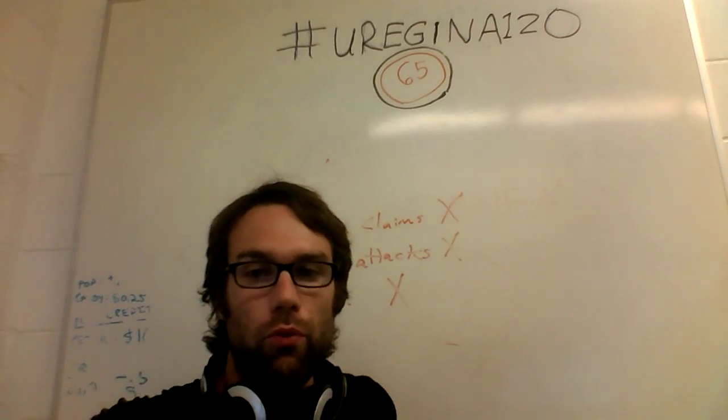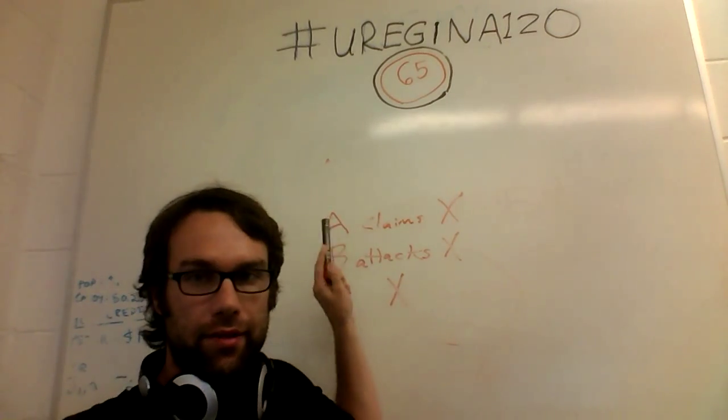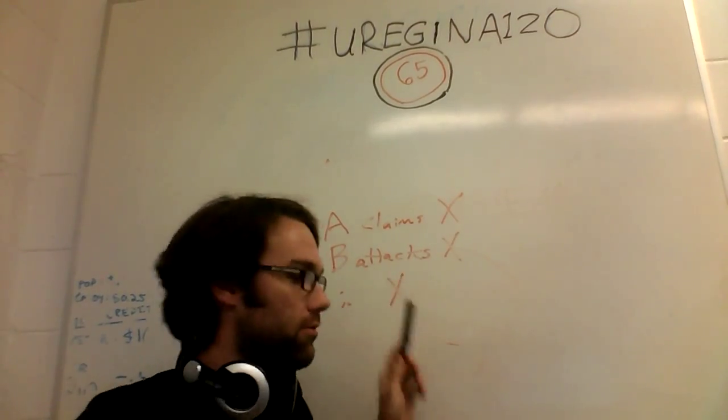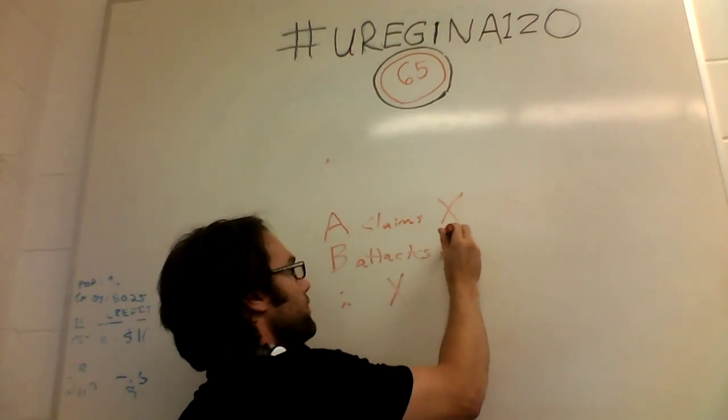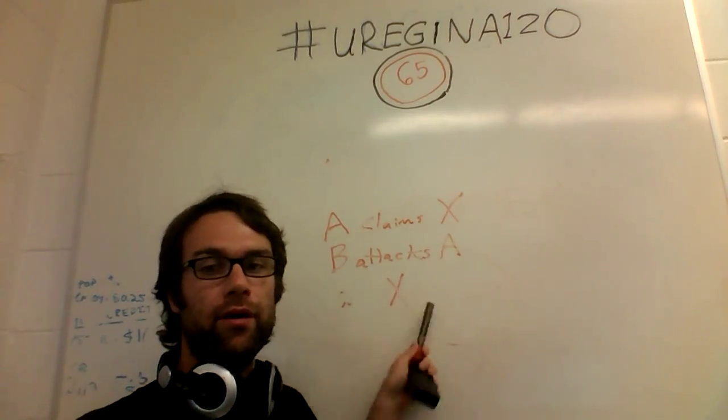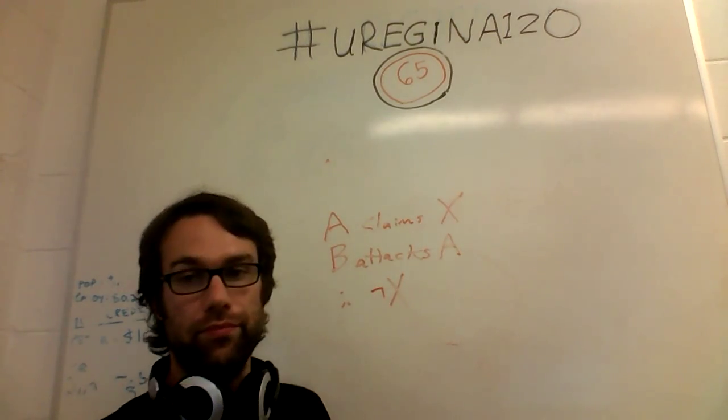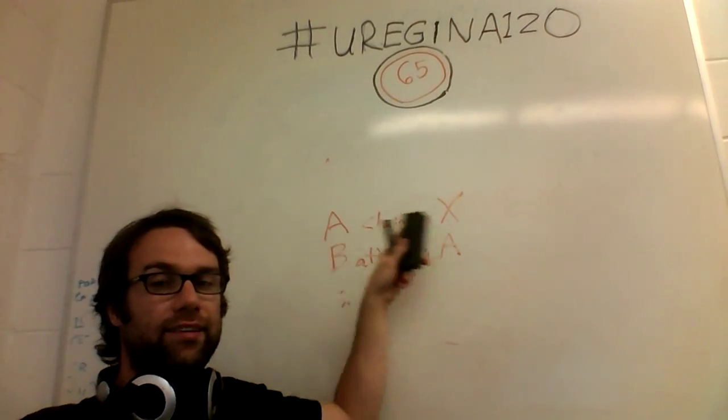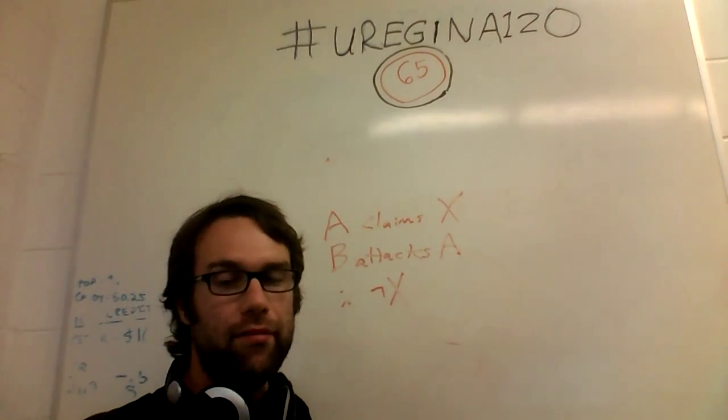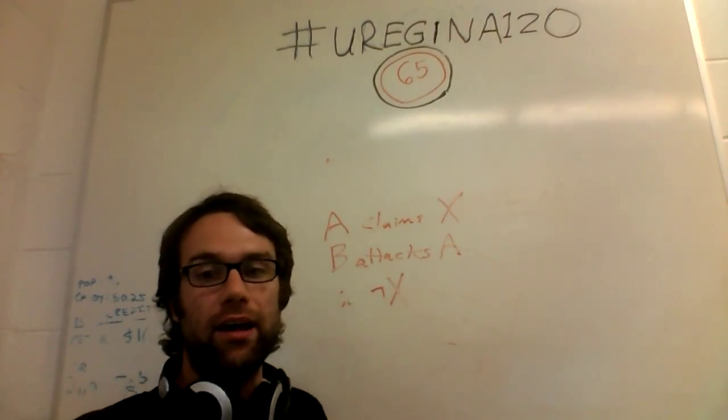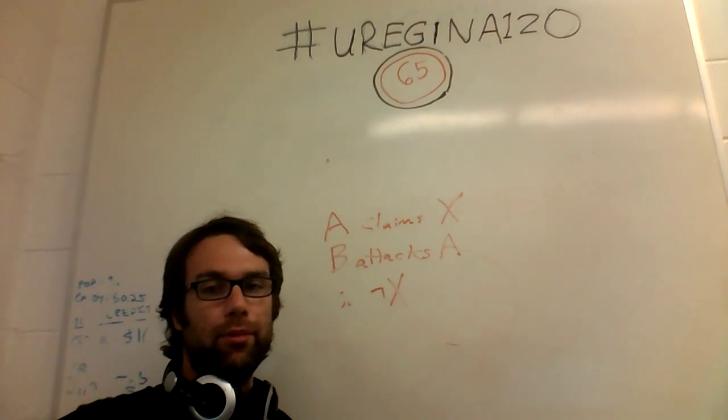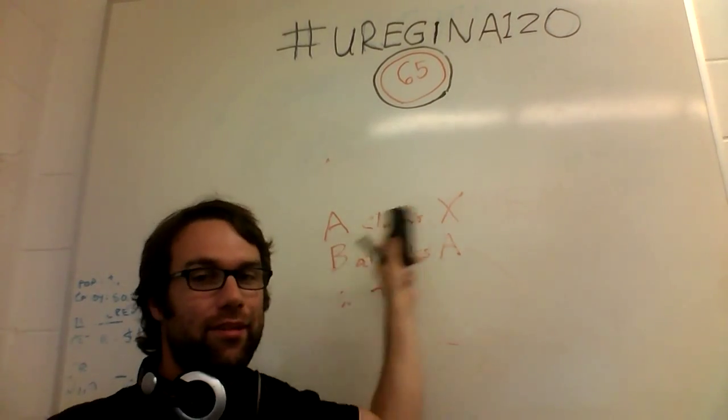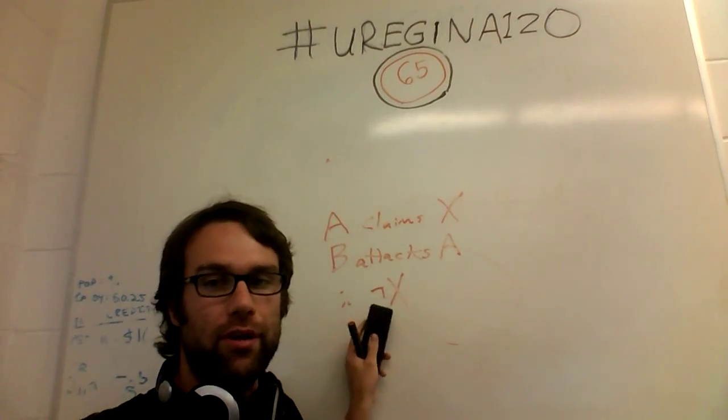The form of the argument, or one of the three forms, is going to be that person A claims some premise X, and then person B attacks person A, therefore X is false. The problem here is that this attack, unless the attack explicitly has some evidence in it that relates to X, is just irrelevant information. It has nothing to do with whether or not X is true or not.